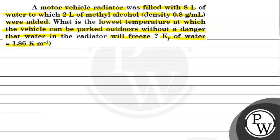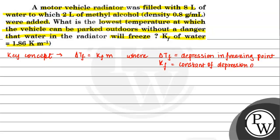Kf of water is given as 1.86 Kelvin. The key concept is delta Tf equals Kf times m, where delta Tf is depression in freezing point and Kf is constant of depression of freezing point.